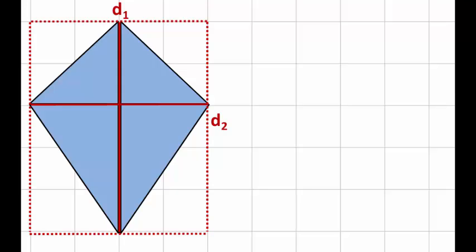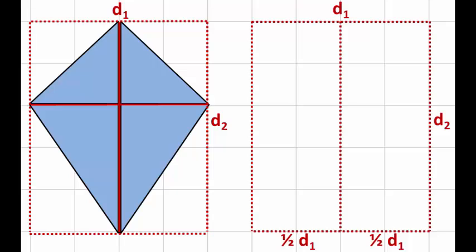So next we're going to create an identical sized rectangle, D1 by D2, like so. But the only difference is we've actually split our rectangle down the middle and then you can see that the width is now made up as half D1 and half D1.